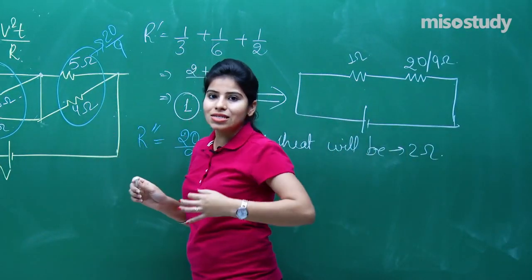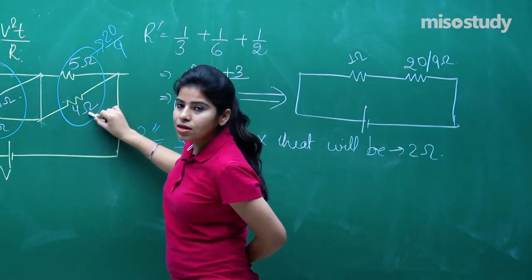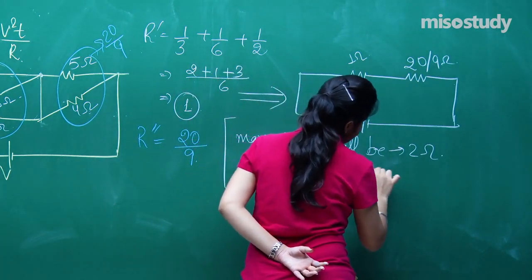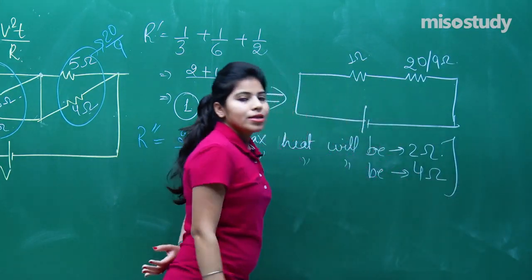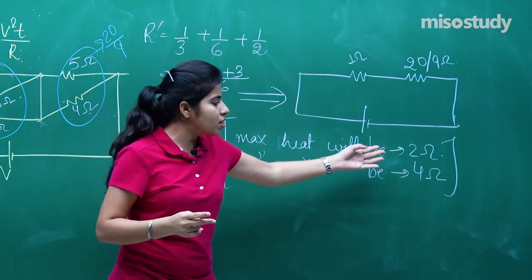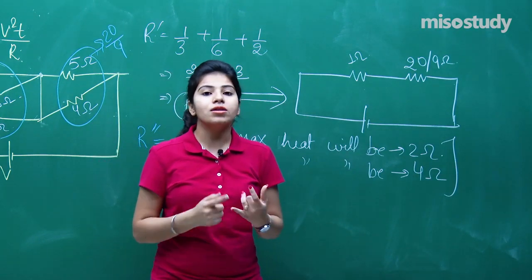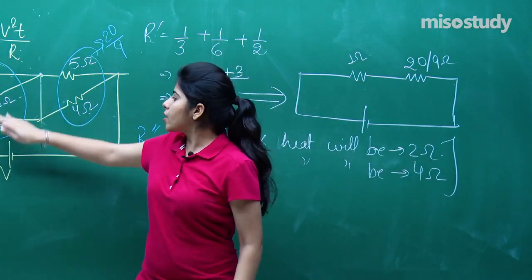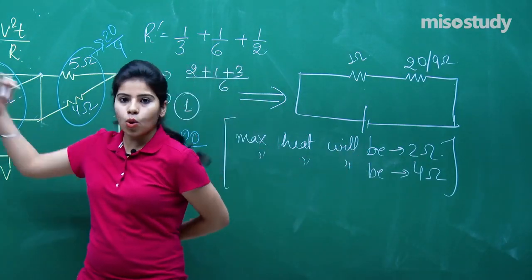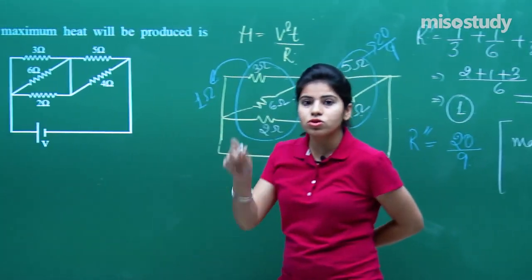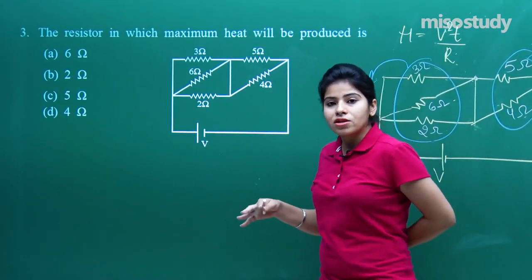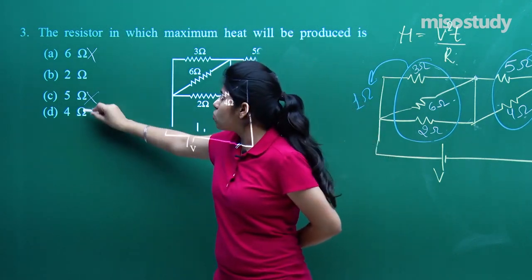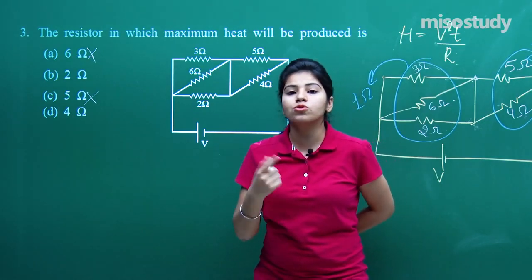The 5Ω and 4Ω resistors are connected in parallel, giving equivalent resistance 20/9 Ω. The circuit is now reduced to 1Ω and 20/9Ω in series. Since these are in series, voltage divides: V1/V2 = 1/(20/9) = 9/20. So V1 = 9V/29 and V2 = 20V/29.